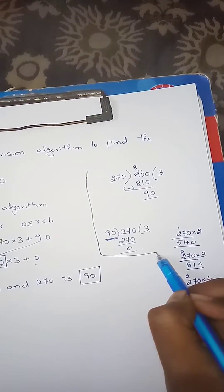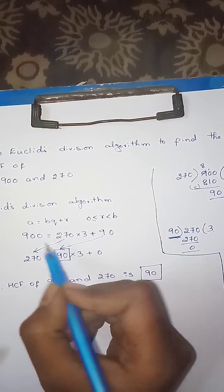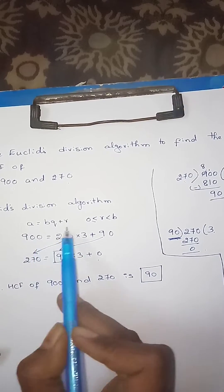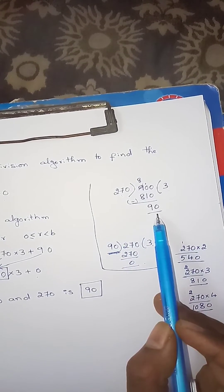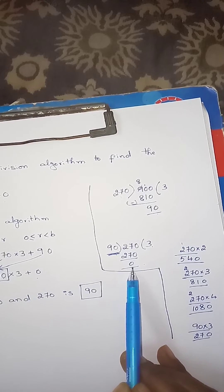We can see: quotient is 3, divisor is 270. Remainder is 0. Therefore, HCF of 900 and 270 is 90. Rough work you can see — neatness is very important. First: 270 into 900 divide, remainder 90; then 90 into 270 divide, quotient 3, remainder 0.